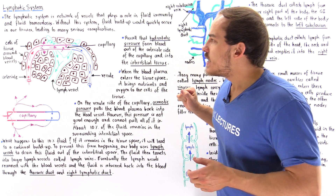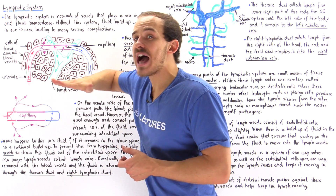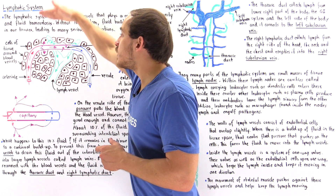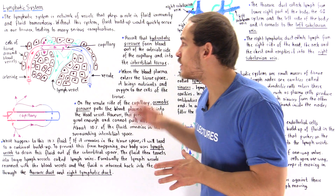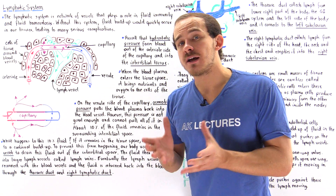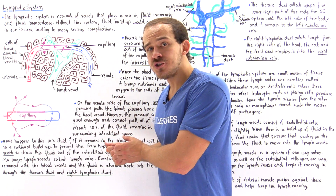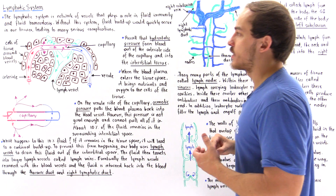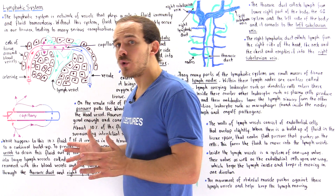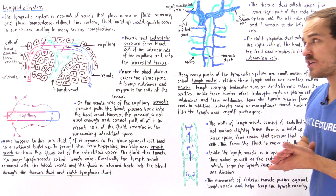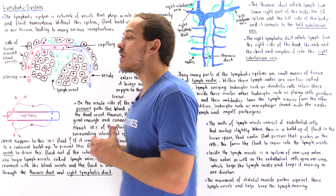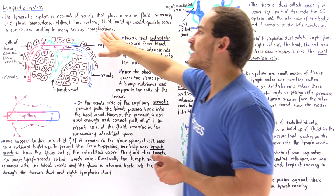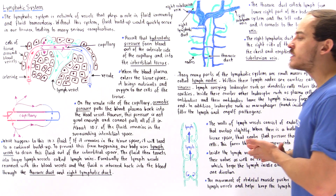It turns out that osmotic pressure on the venule side is not that much higher than the hydrostatic pressure. What that means is not all of the blood plasma that left the capillary actually returns back into the capillary on the venule side. In fact, about 10% of that fluid that left the capillary and entered our tissue will remain in that interstitial space. If this 10% fluid is not removed, there will be a buildup of pressure and fluid inside that tissue, leading to swelling — the process of edema — which can cause serious medical complications.